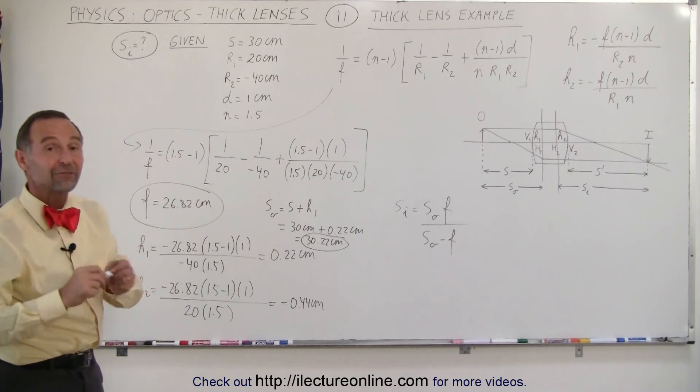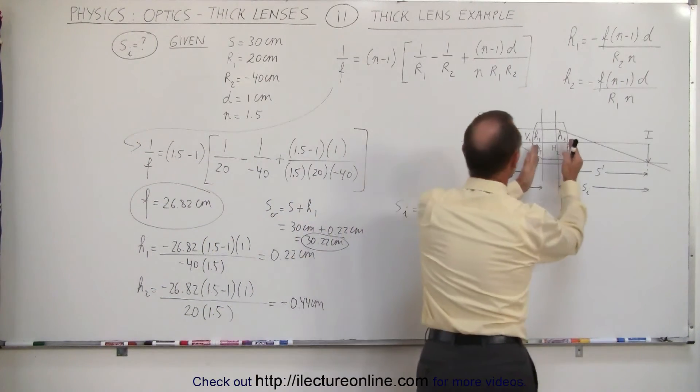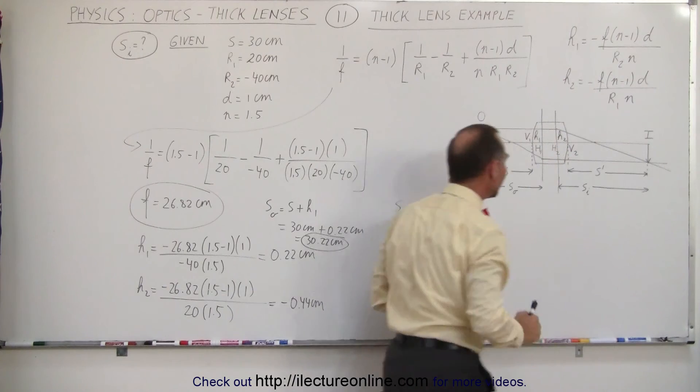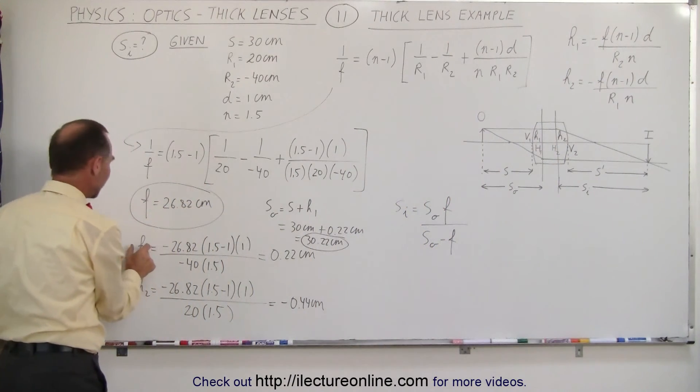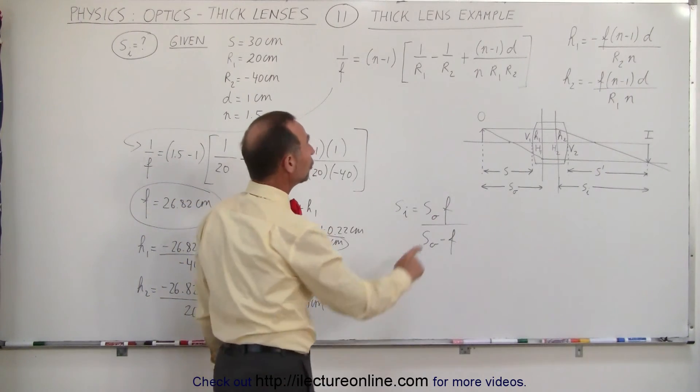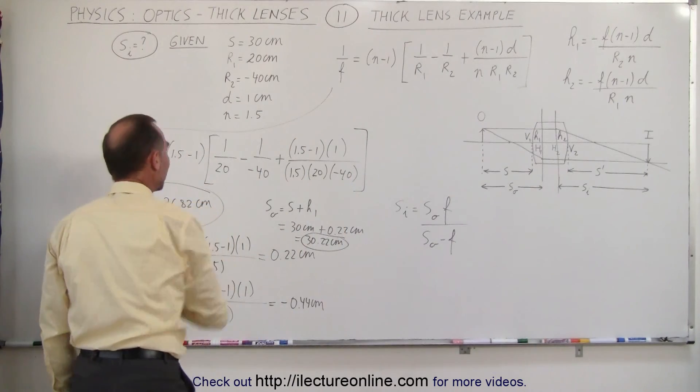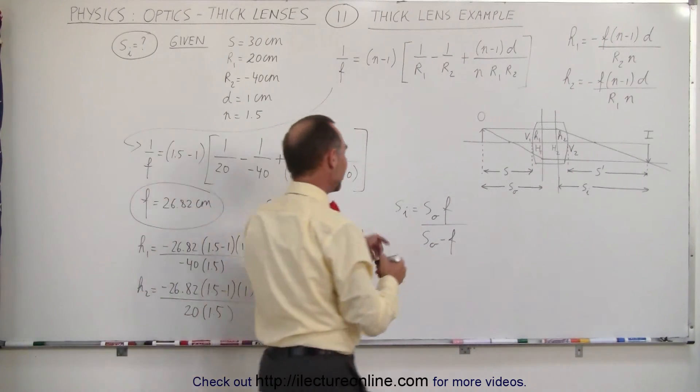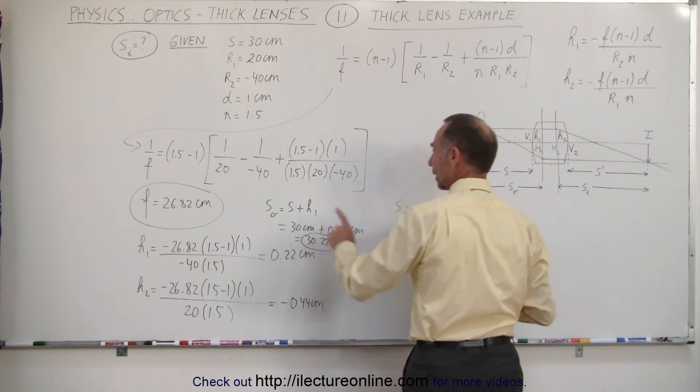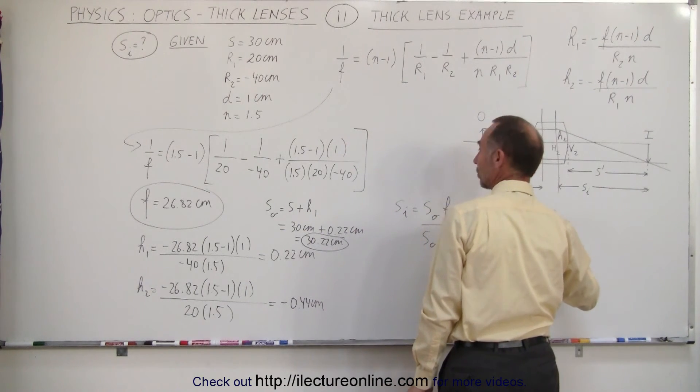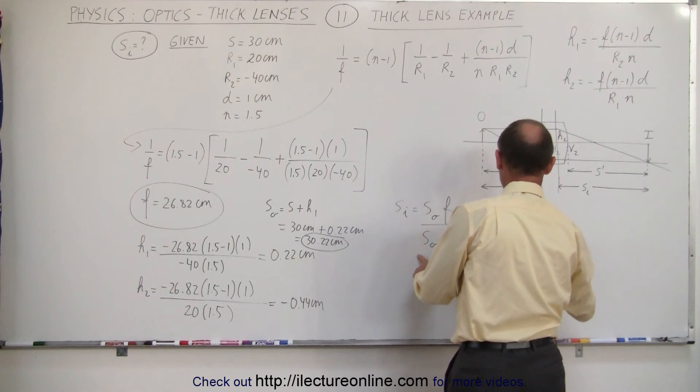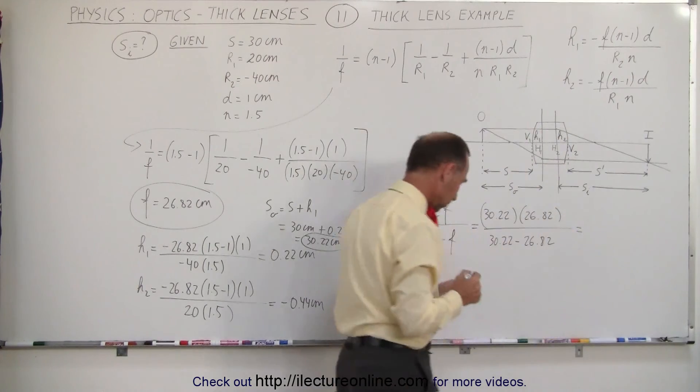So here we have the distance s sub o, which we of course cannot physically measure. If we put a thick lens there, we put an object there, we can only measure the distance from the object to the lens. Since we need to know s sub o to find s sub i, we're going to have to add the distance from the front vertex to the front principal point in order to find s sub o. We do know f, we got that from the lens makers equation, so we're now ready to find s sub i. So this is equal to s sub o, which is 30.22, multiply times 26.82, and divided by s sub o, which is 30.22 minus 26.82. Let me get out of your way so you can take a look at those numbers.